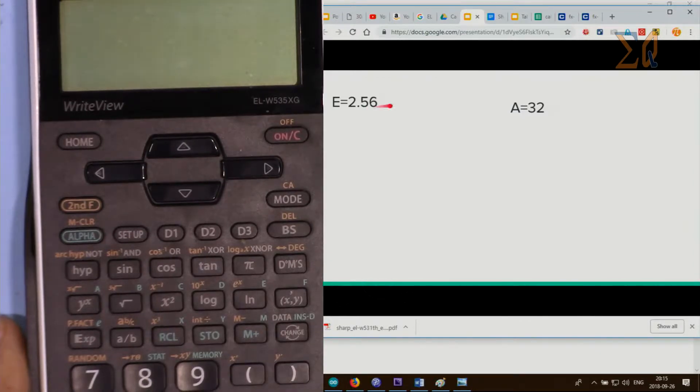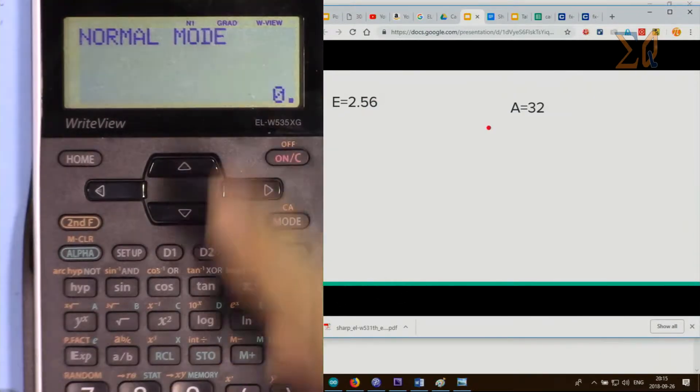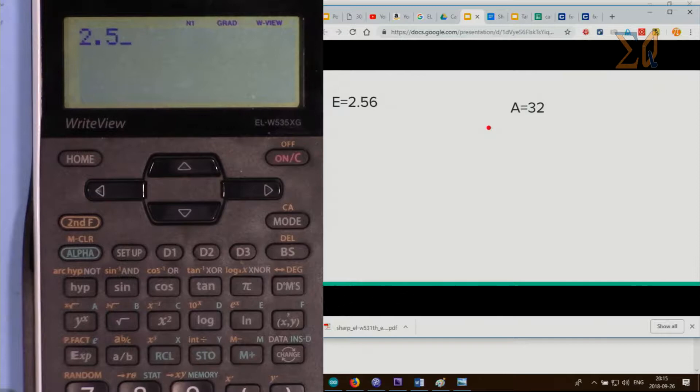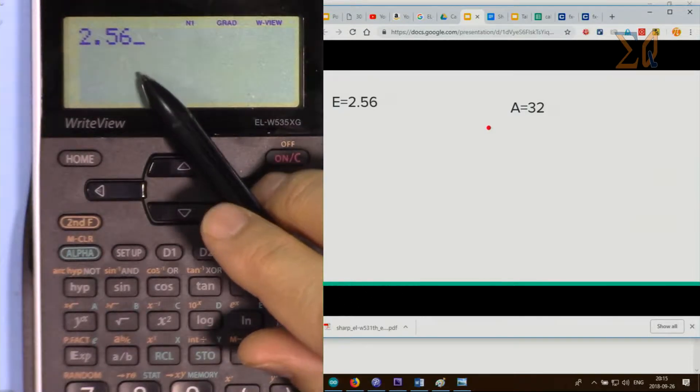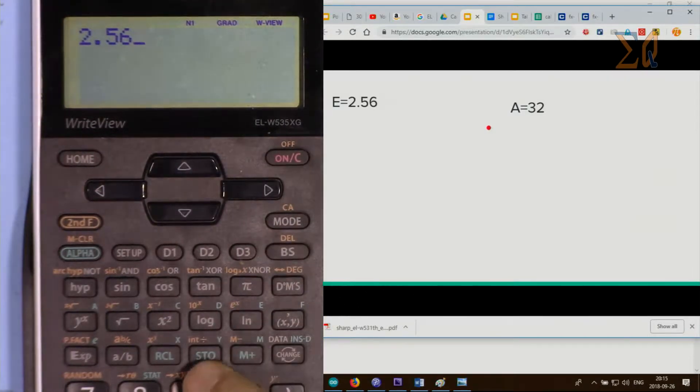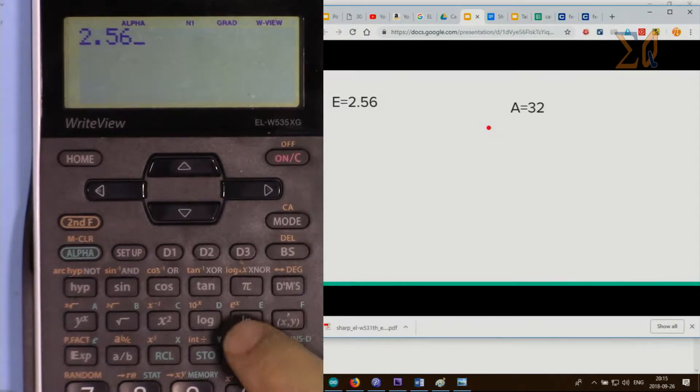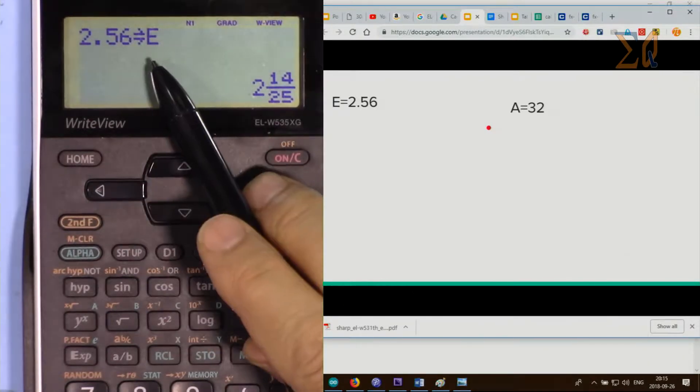Now because I want to store it as a memory in normal mode, I press 2.56. If you want to store it in E, press STO (store) and then E. It shows that value went to E and already converted into fraction.